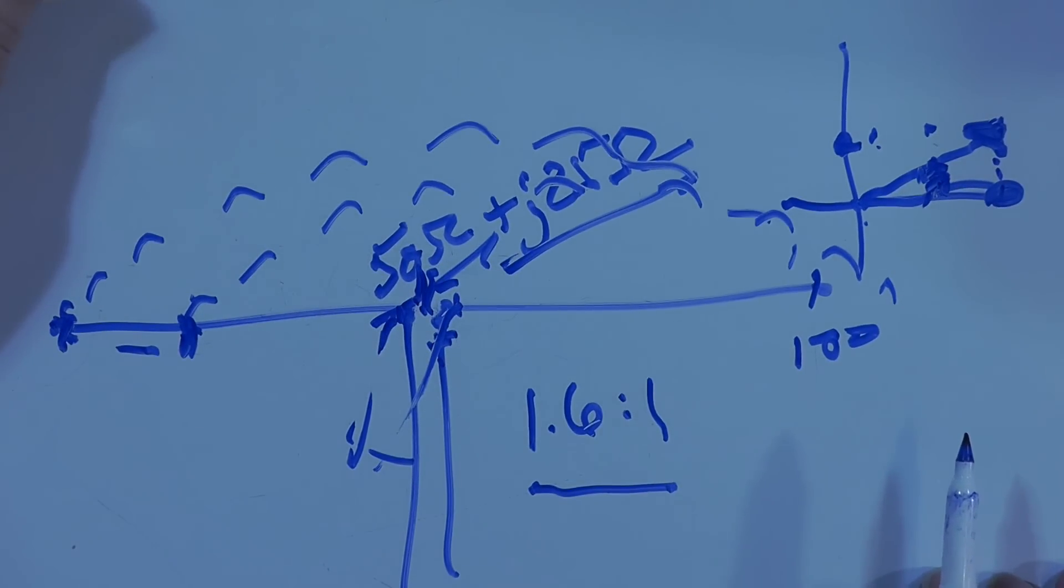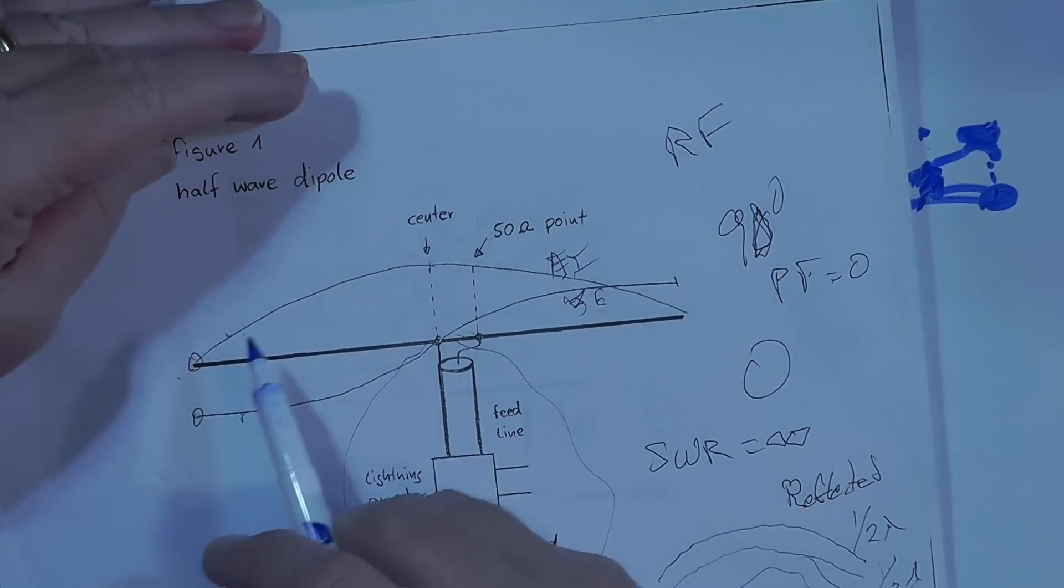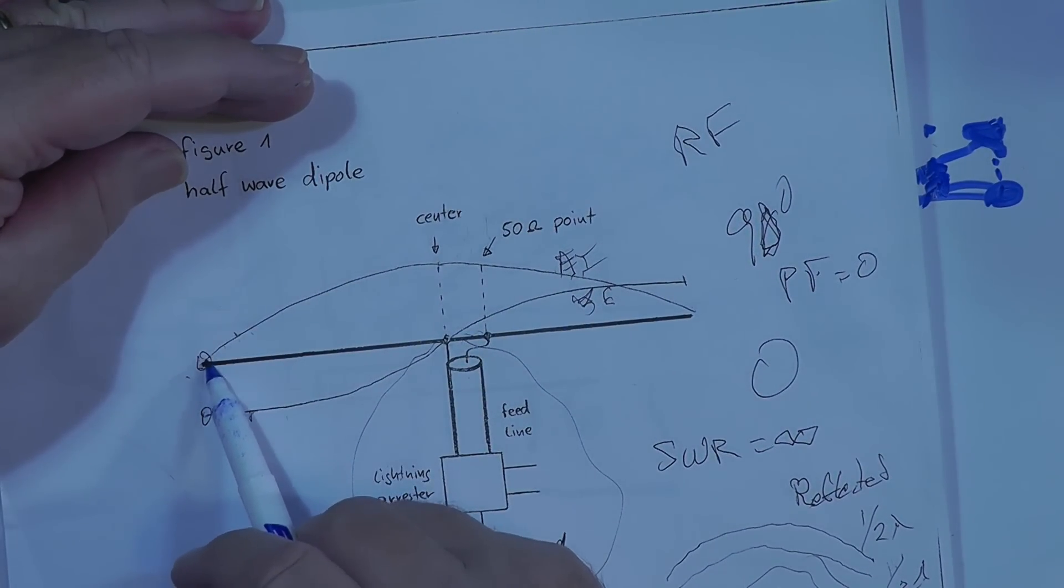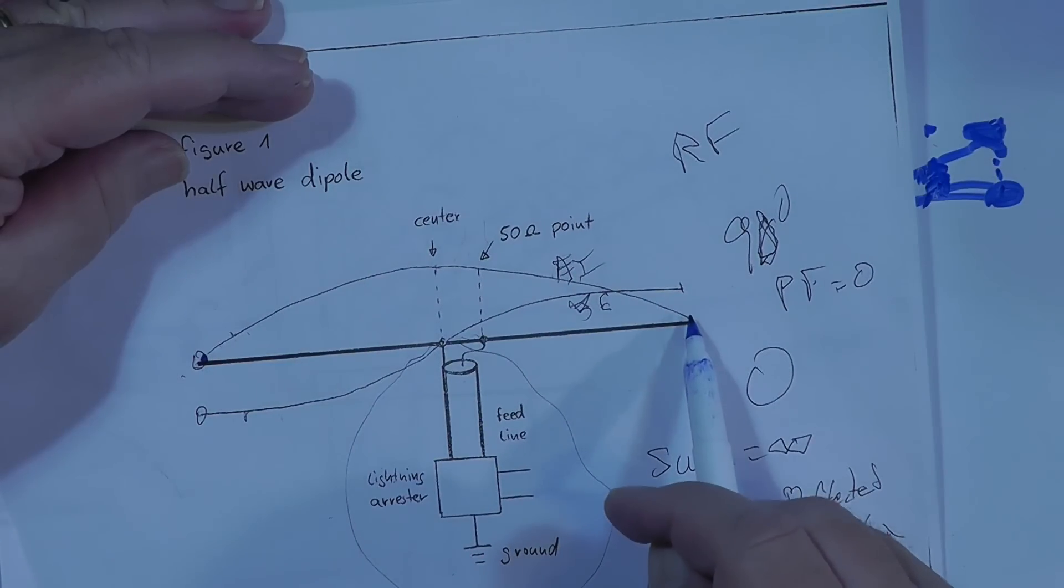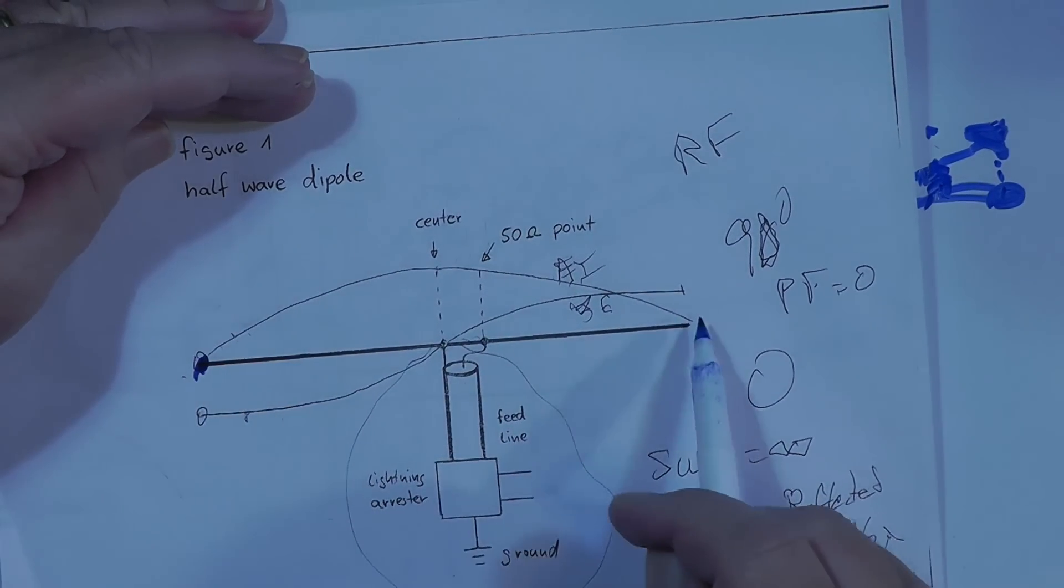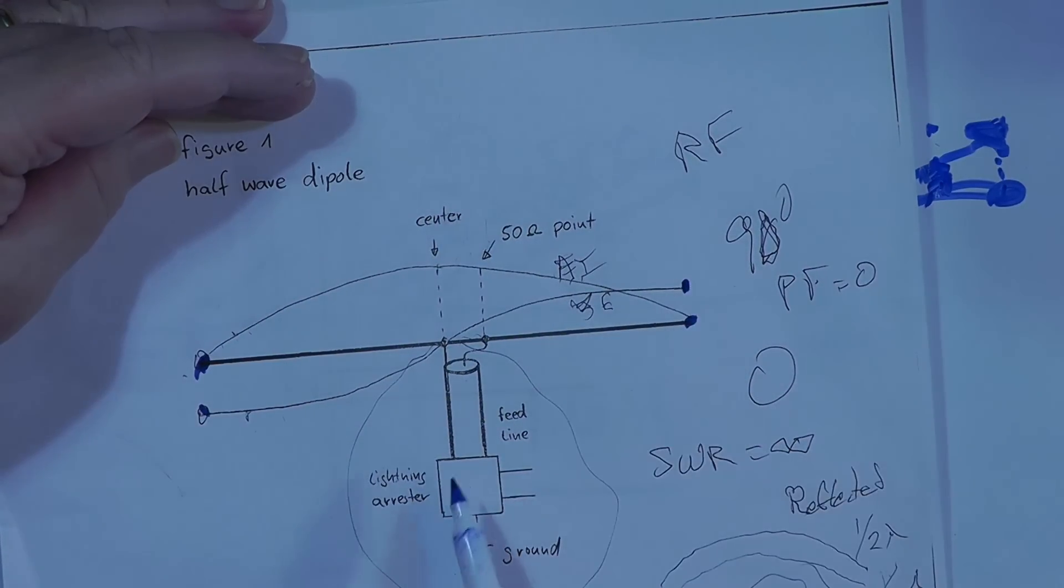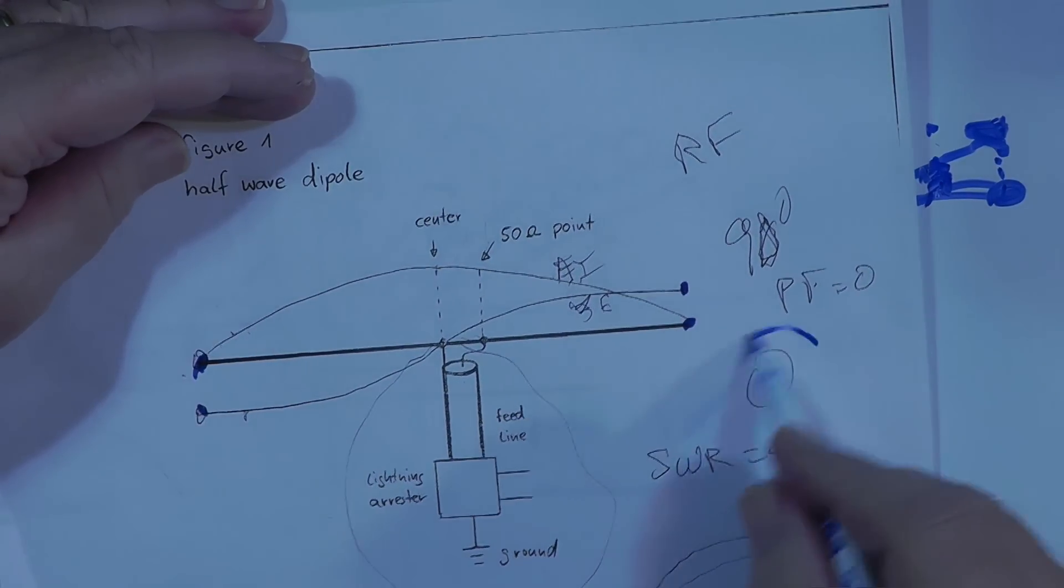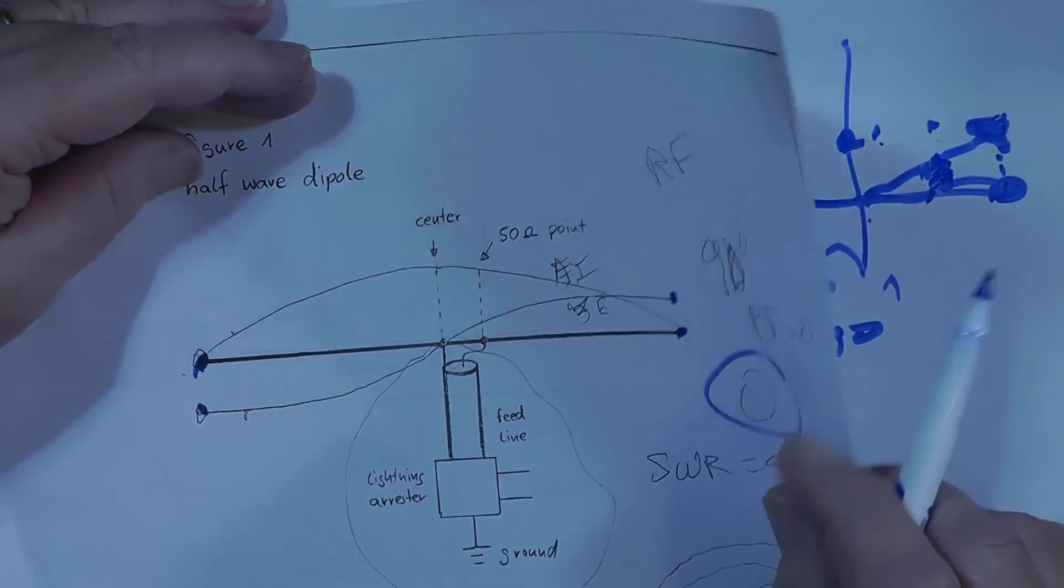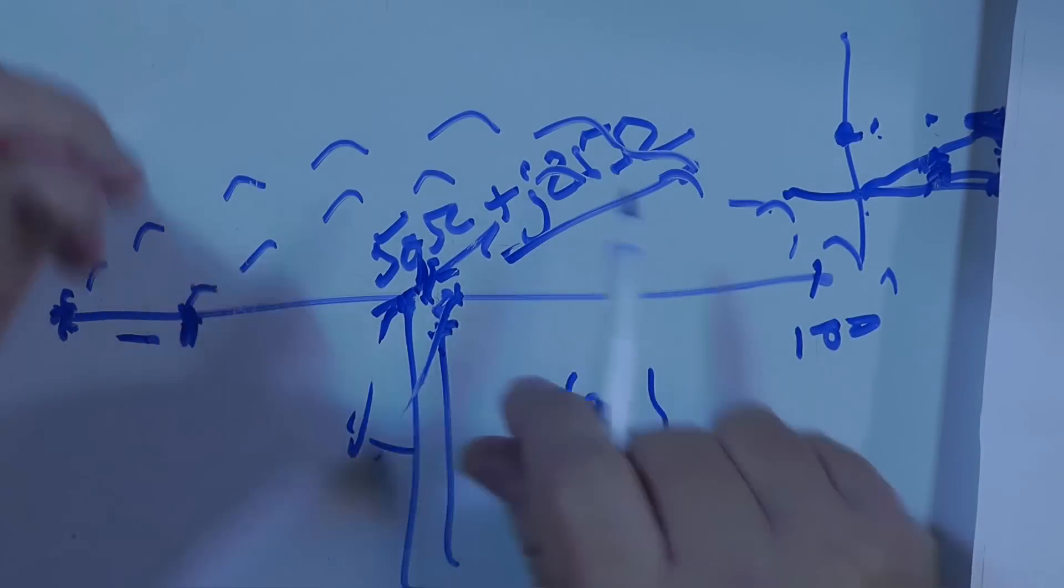So the bottom line here is that this depiction of a dipole with a voltage curve, the current has no place to go at the ends, and the voltage here being maximum at the ends gives you a zero power factor. So this is not the correct representation for a properly radiating dipole. It's more like this.